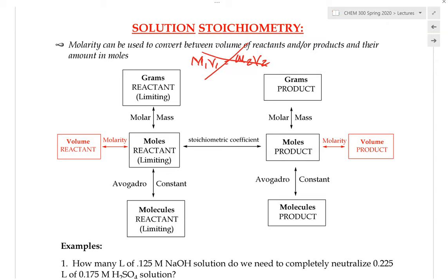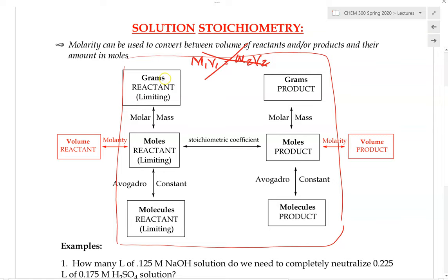Now let's go over how to do solution stoichiometry. The section in black covers what we have already seen on how to do stoichiometry. If we have a reactant and we know grams of the reactant, we figure out the limiting reactant, then use molar mass to convert mass into moles. Once we have moles of the reactant, we go to the balanced equation to figure out how many moles of product would be produced. From there, we can convert into grams of product, or if we know the molarity of the product, into volume of product.